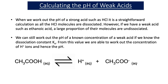In the rest of this video, we're going to focus on how we can use the acid dissociation constant Ka to calculate the pH of weak acids. When we work out the pH of a strong acid such as hydrochloric acid, it's a very straightforward calculation because all the hydrochloric acid molecules are dissociated. But if we have a weak acid such as ethanoic acid, a large proportion of their molecules are undissociated. We can still work out the pH of a known concentration of a weak acid if we know the dissociation constant Ka, because from this value we're able to work out the concentration of H-plus ions, and hence the pH.